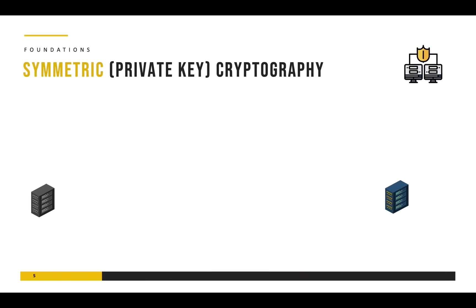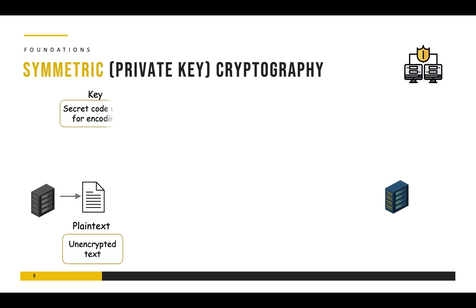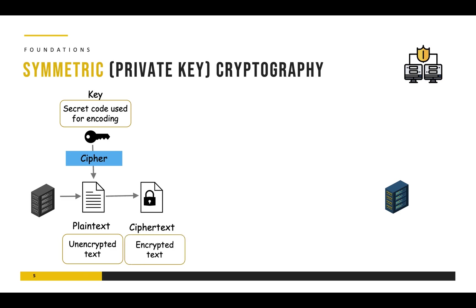Let's have a look at how symmetric encryption actually works. We have a source which wants to send data to a destination and it wants to encrypt that data before sending it. At the source we have a plain text file, which is unencrypted text that anybody can read. We use a key, which is a secret code that helps us encode this plain text. In addition to the key we need an algorithm, which takes the key and the plain text data and performs some operations to produce the ciphertext, which is the encrypted text.